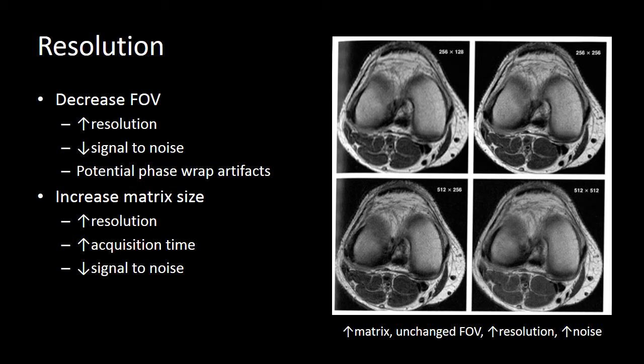Here's that example. Same knee — we're going to keep the field of view exactly the same and increase our matrix. You can see that resolution improves from the left-hand image down to the highest matrix image, and we do have increasing noise from one image to the next. But that improved resolution, I think, is worth the trade-off for having increased noise, which does not greatly degrade this image.